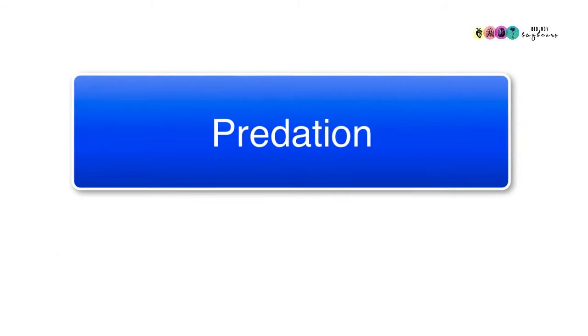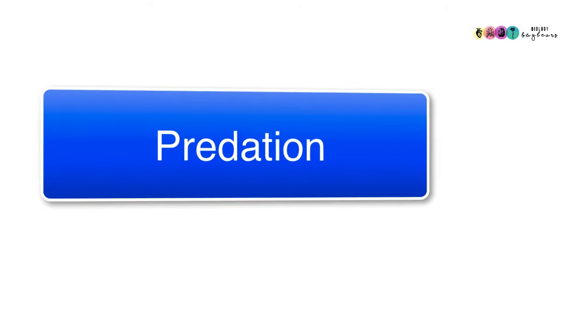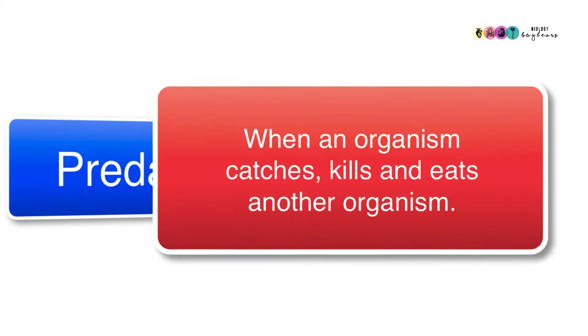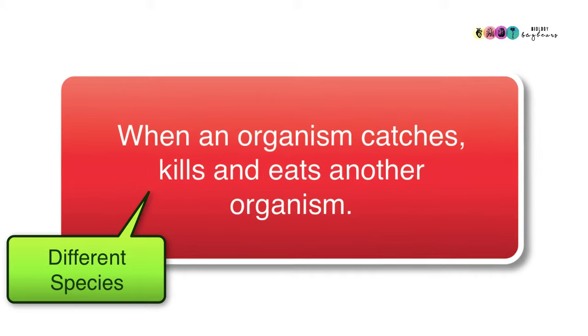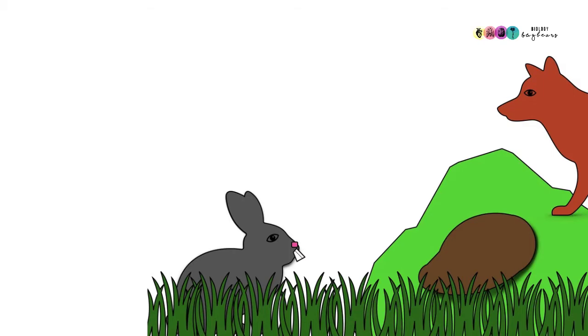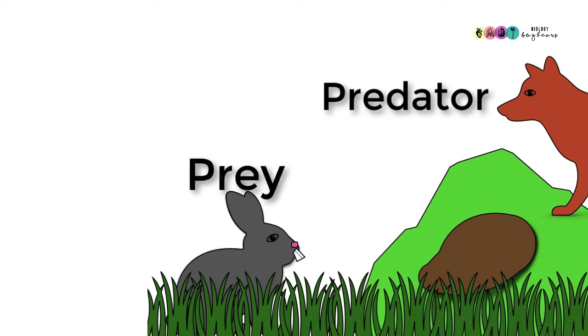In ecology you need to know your definitions really well and you must check the marking schemes for these. You could define predation as when an organism catches, kills and eats another organism of a different species. The organism that does the catching, killing and eating is the predator and that which gets eaten is known as the prey.